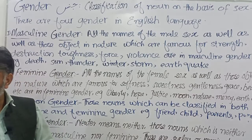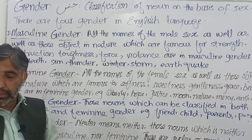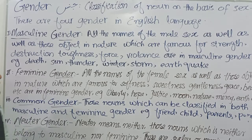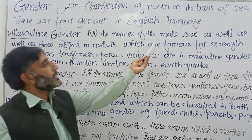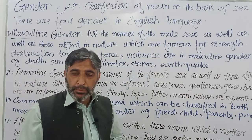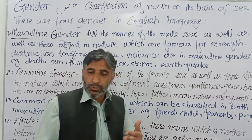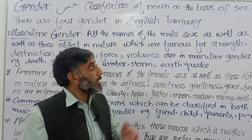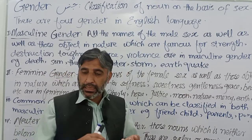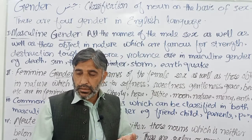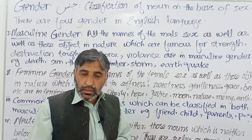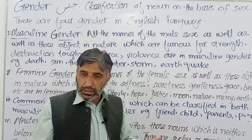There are four genders in English language. Urdu aur Pashto mein 2 gender hain lekin English mein total 4 gender hain. The first one is masculine gender — masculine means muzakkar. All the names of male sex — jo male sex se ta'alluq rakhte hain, jo muzakkar se, jo nar se ta'alluq rakhta hai — wohi masculine gender hai. Jaise boy, father, dog, aur ox.